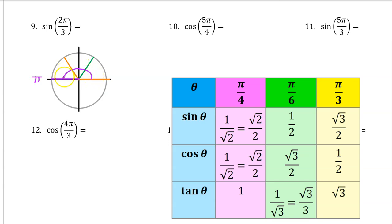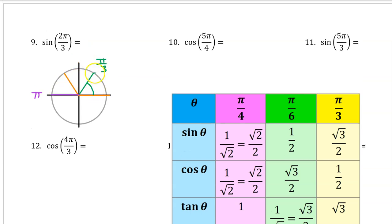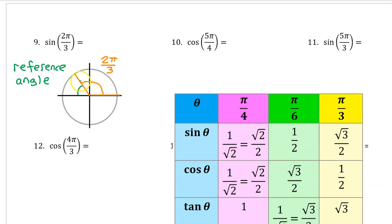Pi radians is a semicircle, so if you take a semicircle and divide it evenly into three parts, each one of those sectors is one third of pi. In other words, each sector has a measure of pi over 3 radians. An angle that stops here has a measure of pi over 3 radians. An angle that stops here has a measure of 2 pi over 3 radians. The angle of 2 pi over 3 radians has something called a reference angle, which is the angle between the terminal side and the nearer part of the x-axis. In this case, the reference angle is pi over 3.